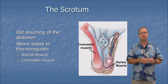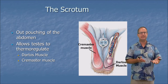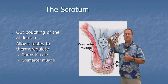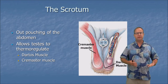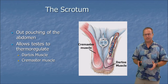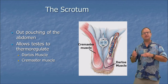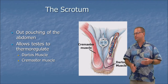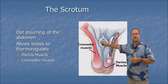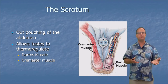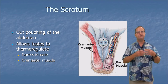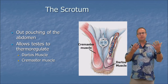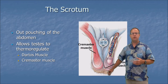First, the scrotum is the outpouching of skin that holds the testes. The testes hang outside the body, which is unusual — female gonads are inside the abdomen, well protected. The reason the testes are outside is that sperm production works best at around 95 degrees Fahrenheit, whereas human body temperature is around 98.6. The scrotum allows the testes to hang lower and cool off for efficient sperm production. Muscles in the scrotum can elevate the testes when it's cold or let them hang lower when it's warm.